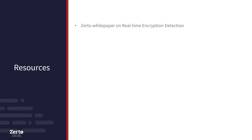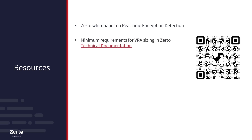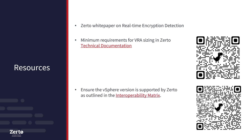For additional resources, see the Zerto white paper on real-time encryption detection. Also, read the minimum requirements for VRA sizing outlined in Zerto technical documentation. This will help avoid dropped I/Os during the collection phase. To ensure that the vSphere version is supported, please see Zerto's interoperability matrix. The Encryption Analyzer is currently only available with Zerto for VMware vSphere, including VMware on public cloud.